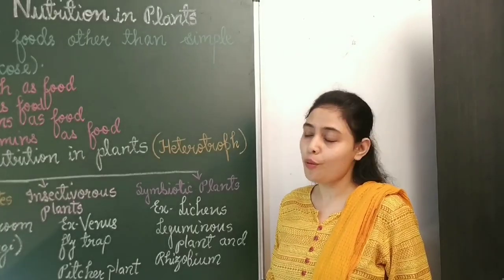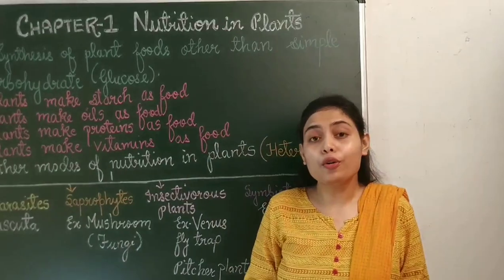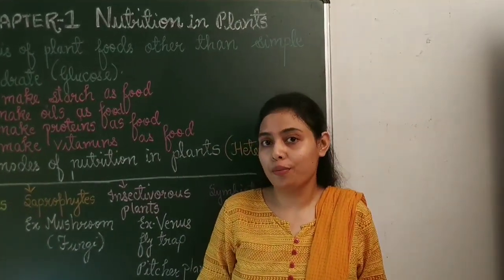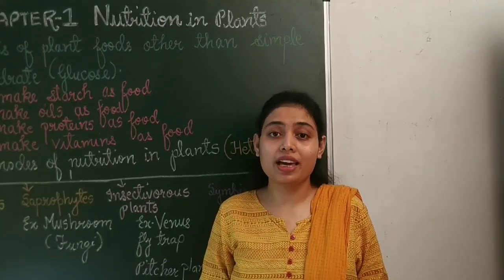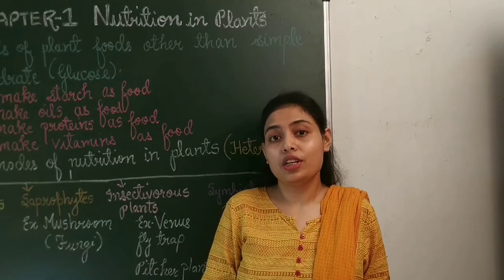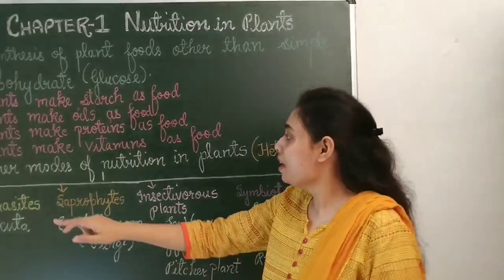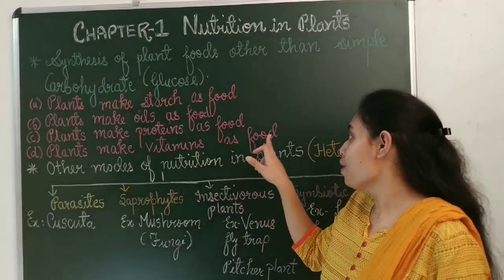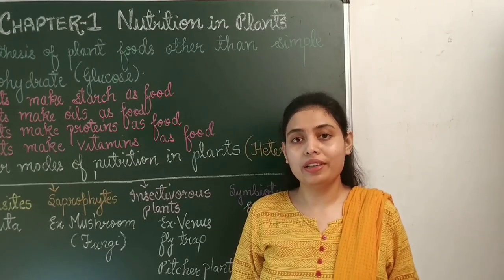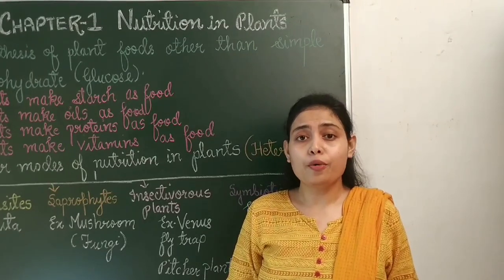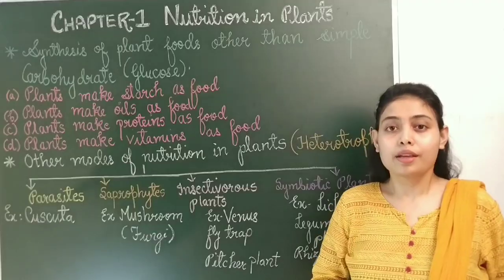Plants make proteins as food. During photosynthesis, when a plant absorbs water from the soil, it also absorbs nitrate. This nitrate is used to make amino acids and further this amino acid is used to make protein. Plants also make vitamins as food. Vitamins are complex structures and are produced by plants only. Animals and humans cannot produce vitamins. A large amount of vitamins is present in fruits and vegetables.